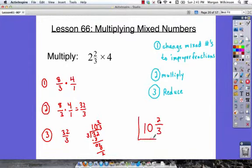When we follow that three-step process of changing mixed numbers to improper fractions, then multiplying, then reducing, we can figure out our product to any multiplication problem with mixed numbers. Let's look at our next example.